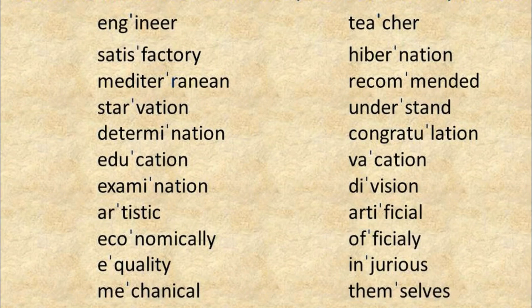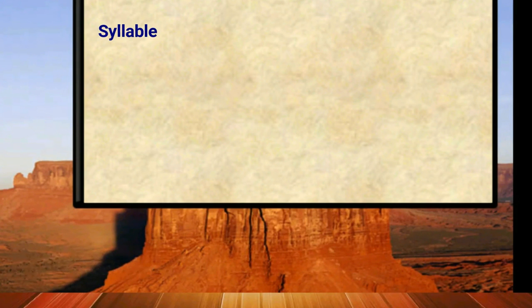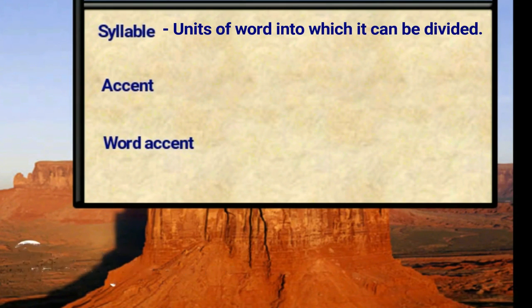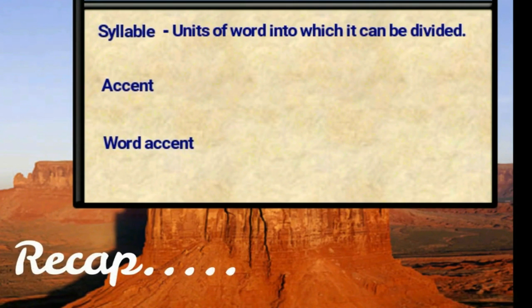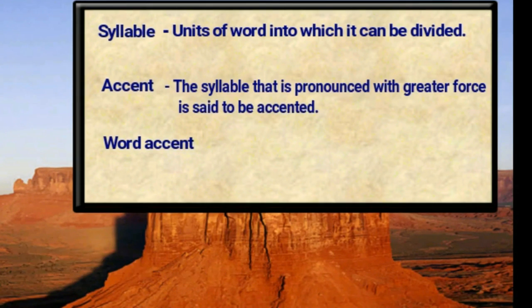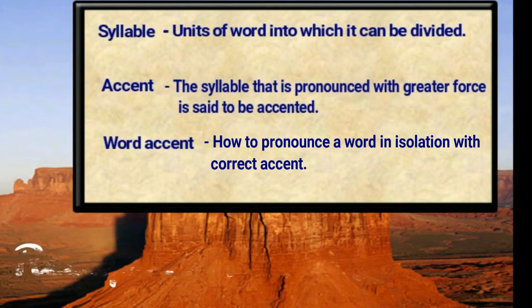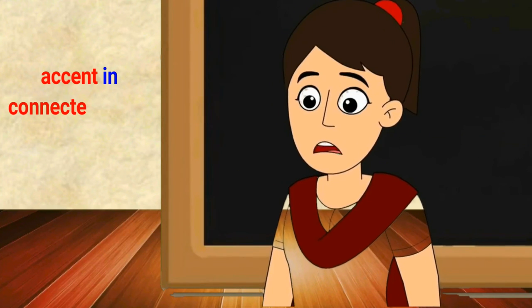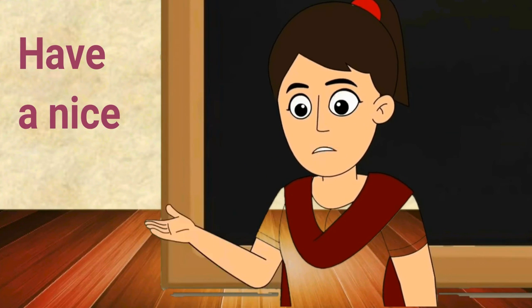Did you notice the stress and how it differs from word to word? In this module, we came to know about syllable, accent, and word accent. A syllable is a unit of words into which the word can be divided. Accent is the syllable that is pronounced with greater force. Word accent is how to pronounce a word in isolation with correct accent. Thank you friends. I will continue the topic of accent in connected speech in the next module. Till then, have a nice time.